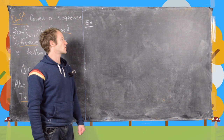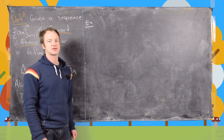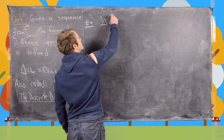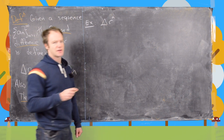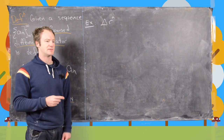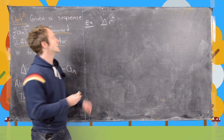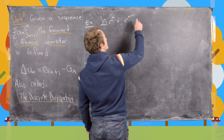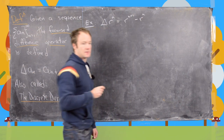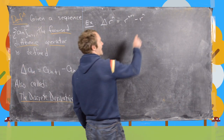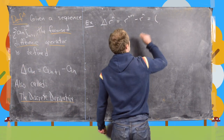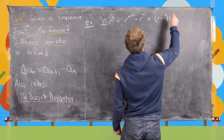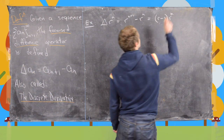Now let's look at the forward difference operator applied to an exponential sequence. Delta of r^n equals r^{n+1} minus r^n. Factoring out r^n, we get (r minus 1) times r^n.